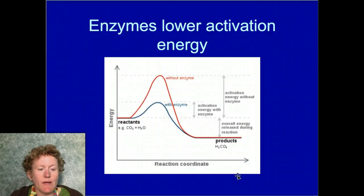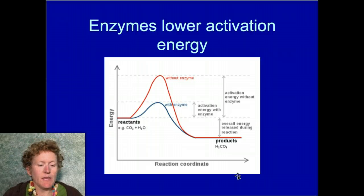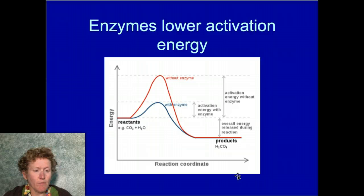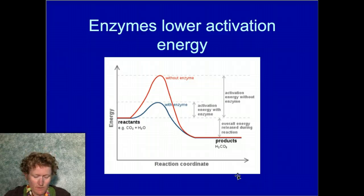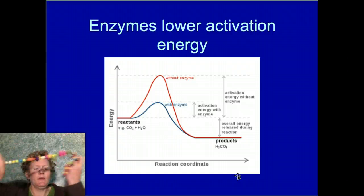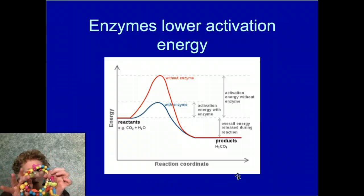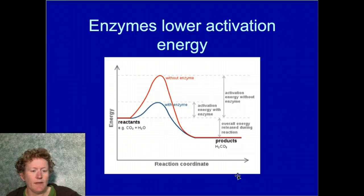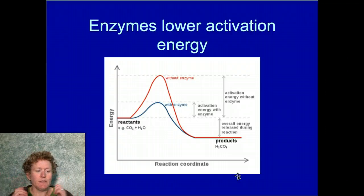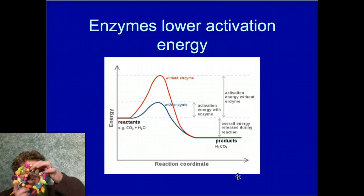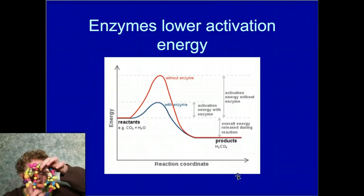Enzymes lower activation energy, making it easier for a reaction to happen. The enzyme curls up and takes on a particular shape that holds a molecule in a specific way — like making a little place for a biological compound to come in. Sometimes it brings two pieces together, sometimes it cuts them apart, but it makes the reaction easier by providing a special active site.